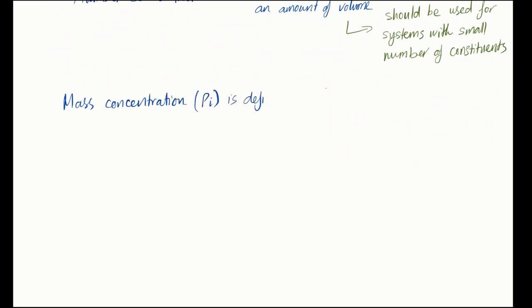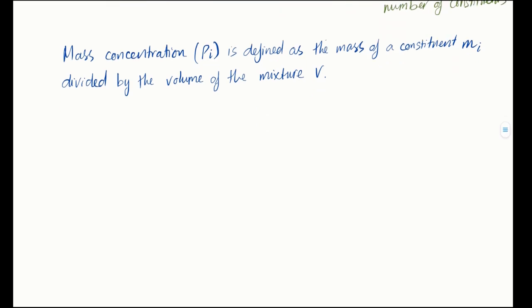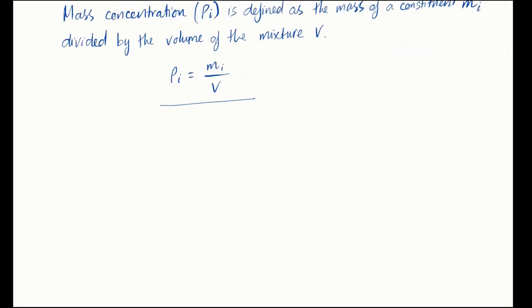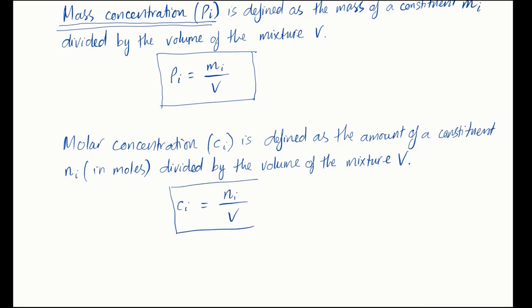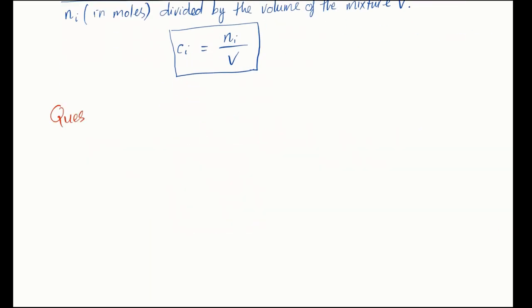Mass concentration is defined as the mass of a constituent, Mi, divided by the volume of the mixture, V. Molar concentration is similar to number concentration, but the amount of constituents is represented in moles instead of number because there are just too many of them.